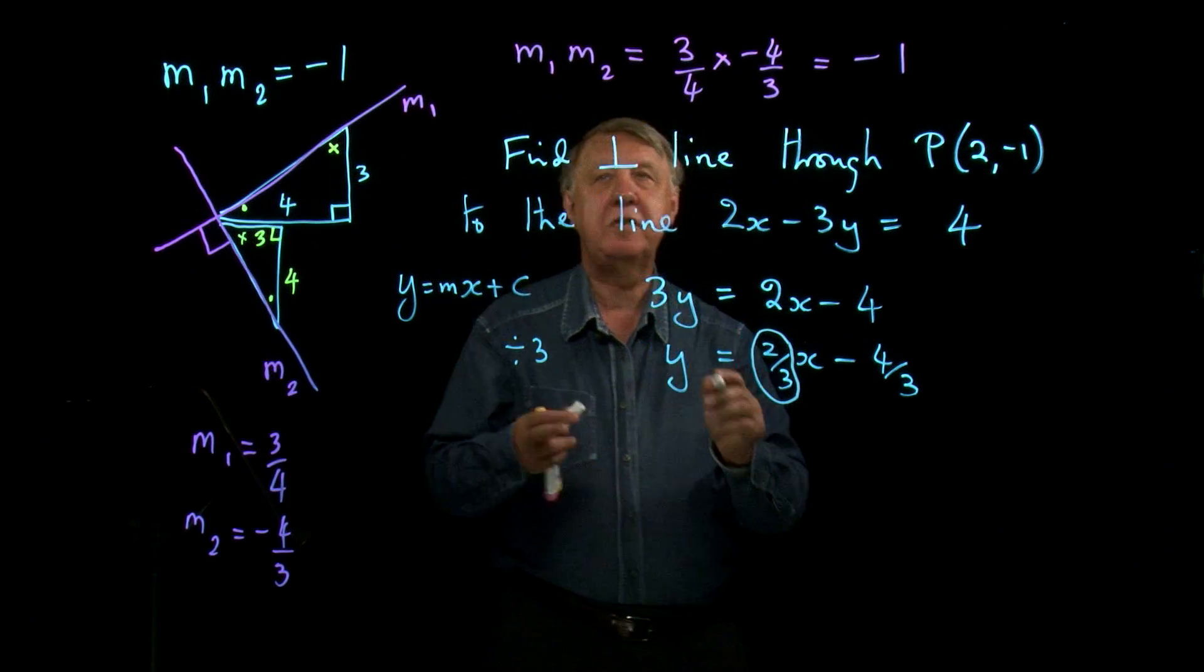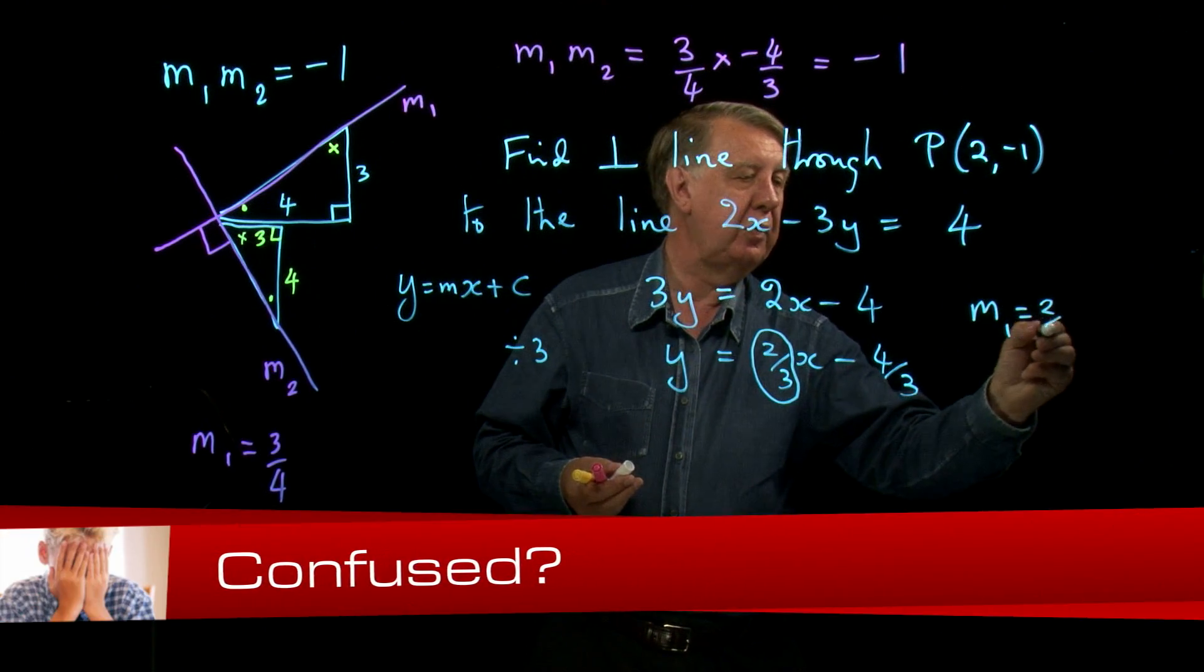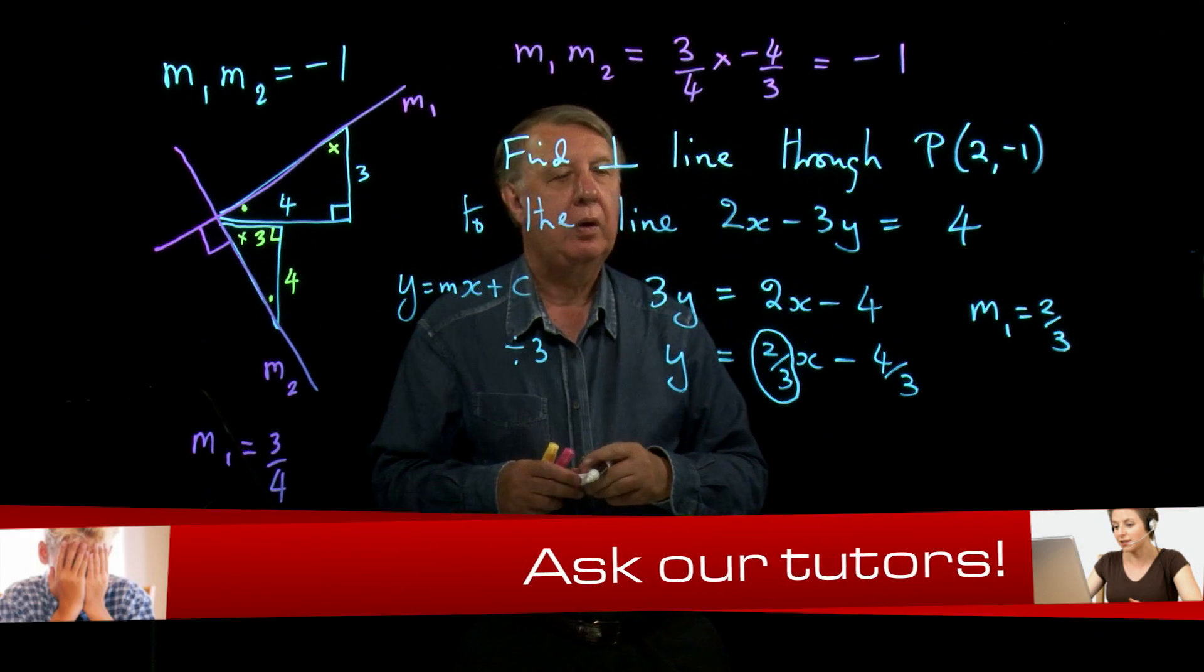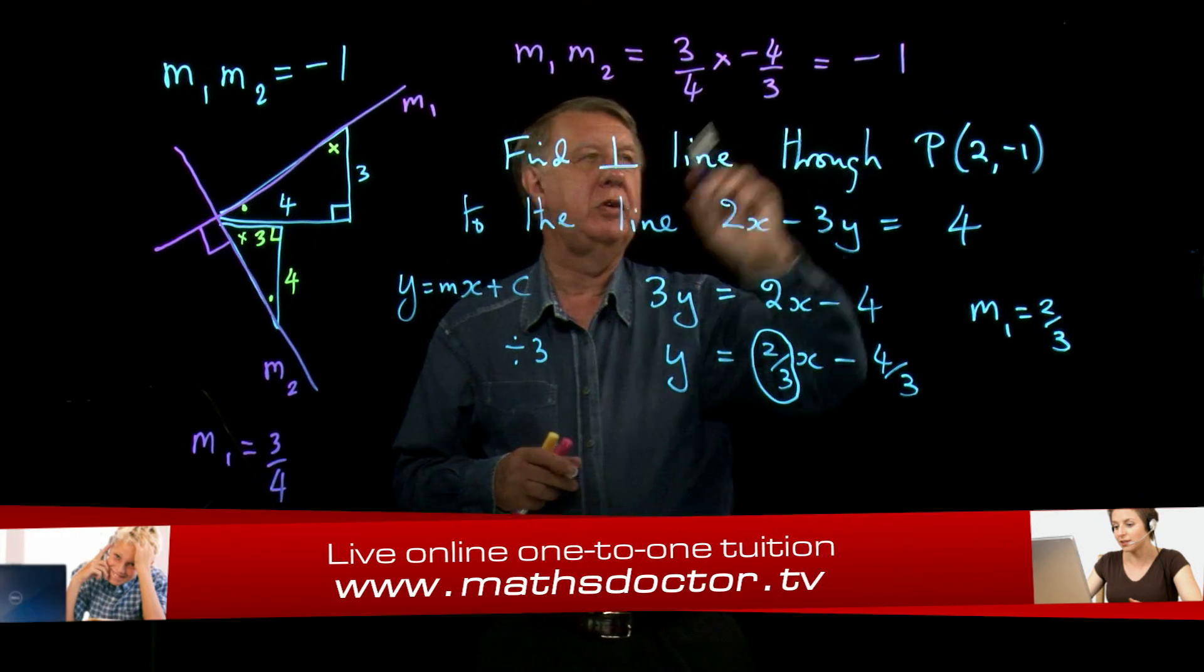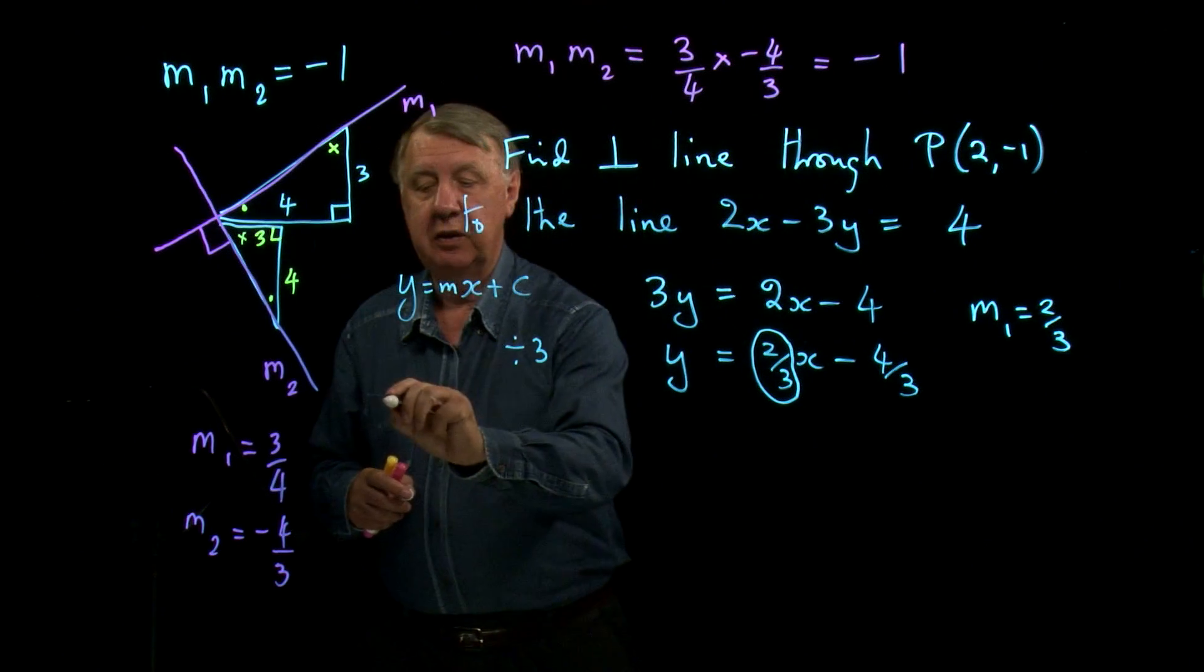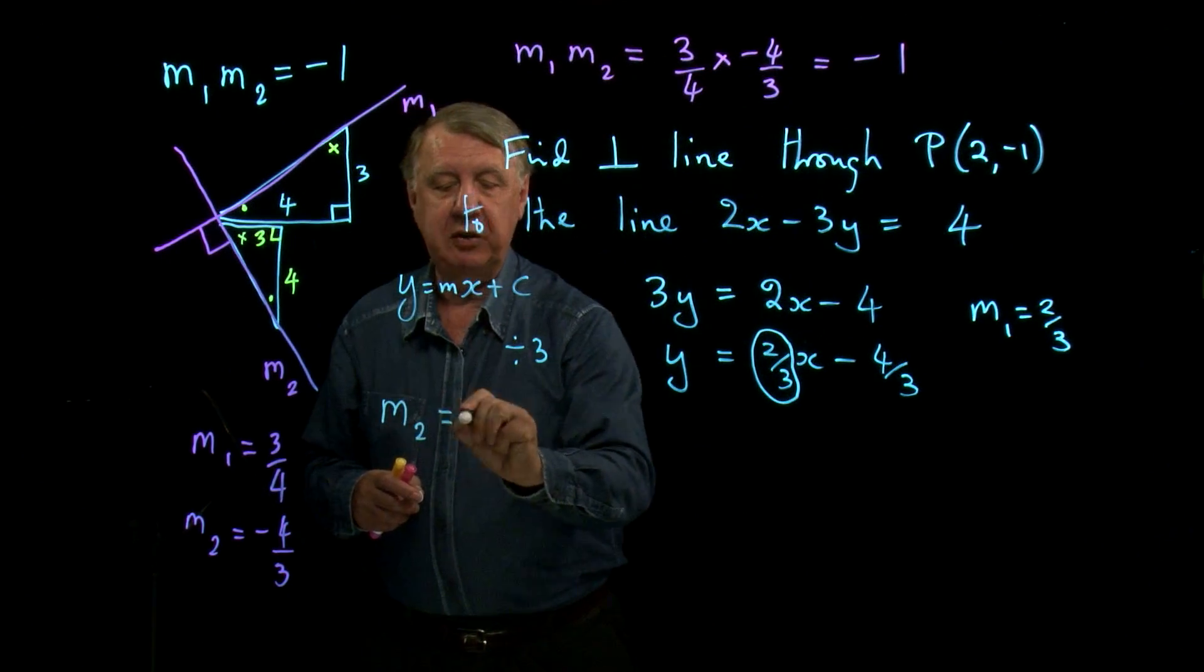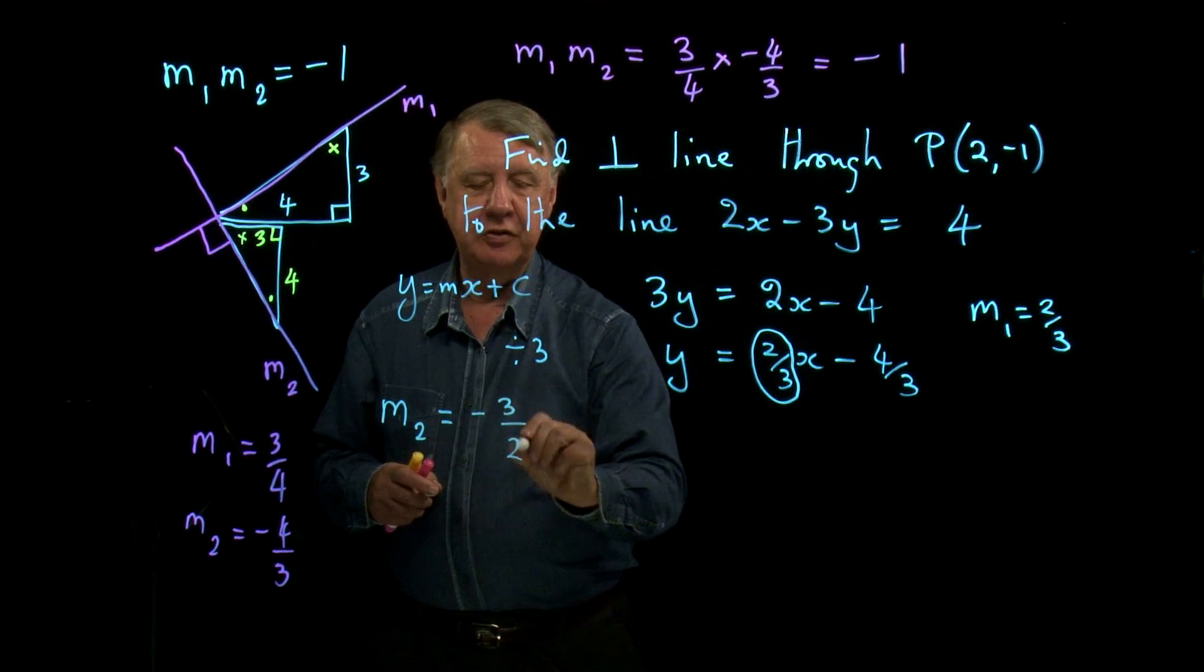So the gradient of line 1 is 2 thirds, and this is my m1. So m1 is 2 thirds. The rule says m1 times m2 is negative 1, so that means then that my perpendicular line m2 will have a gradient of negative 3 over 2.